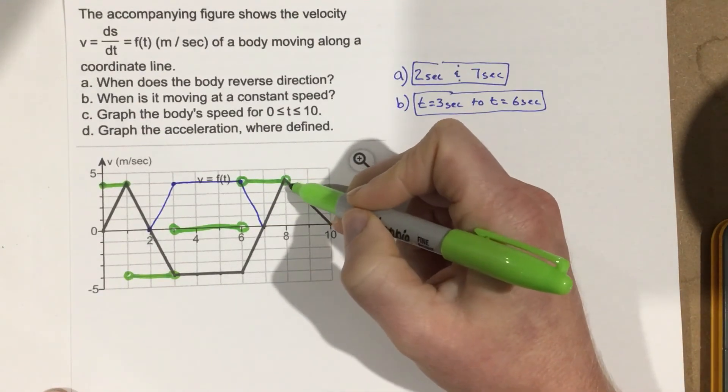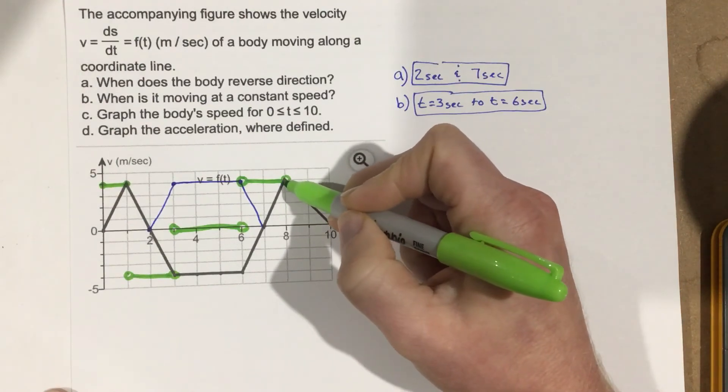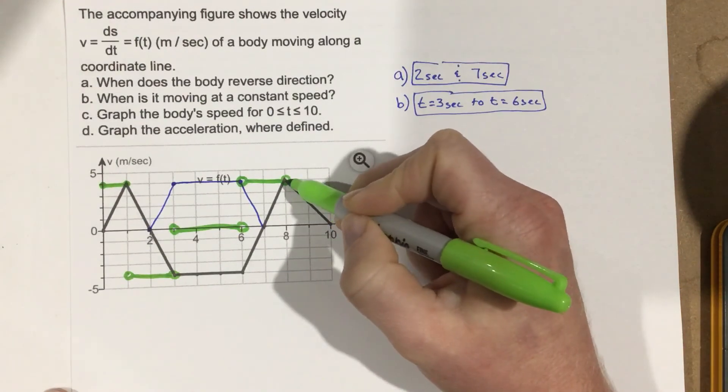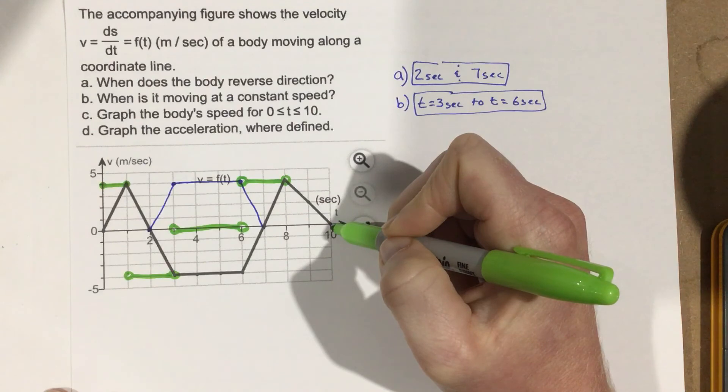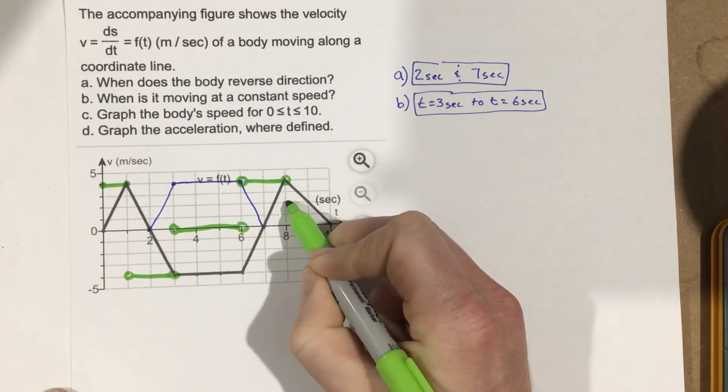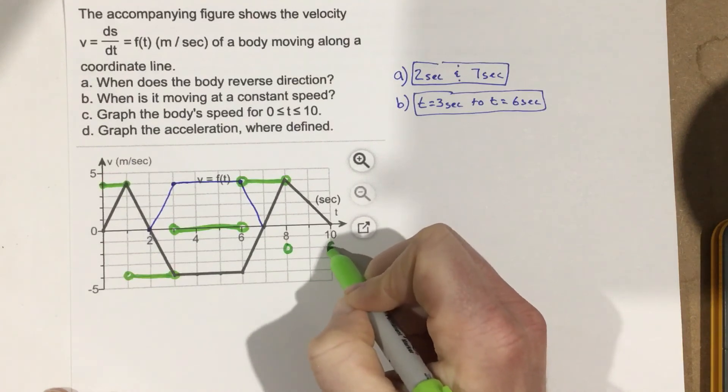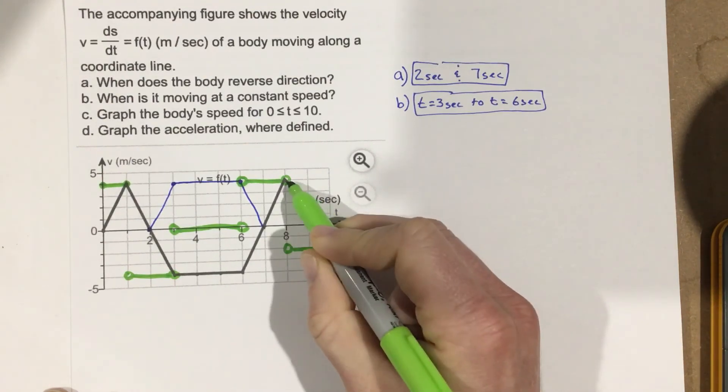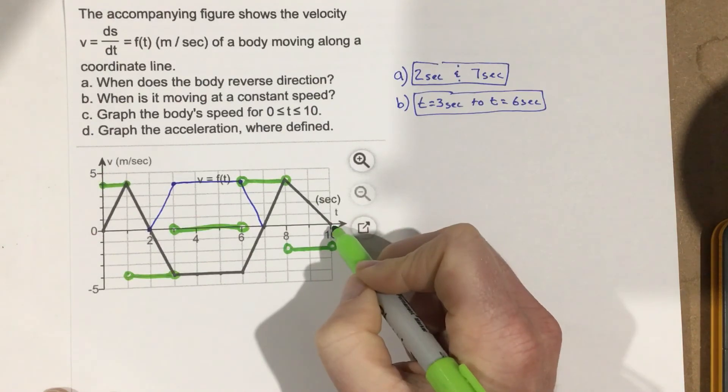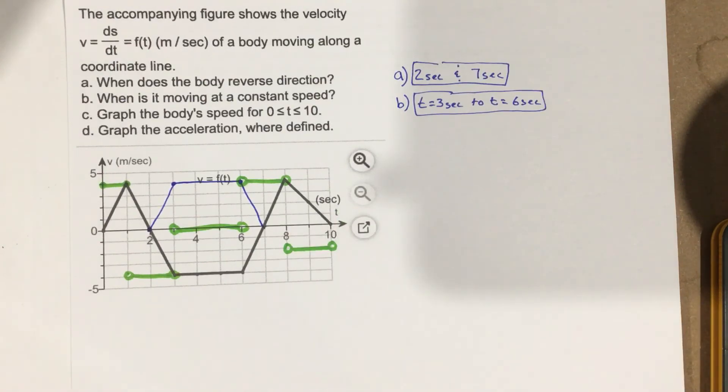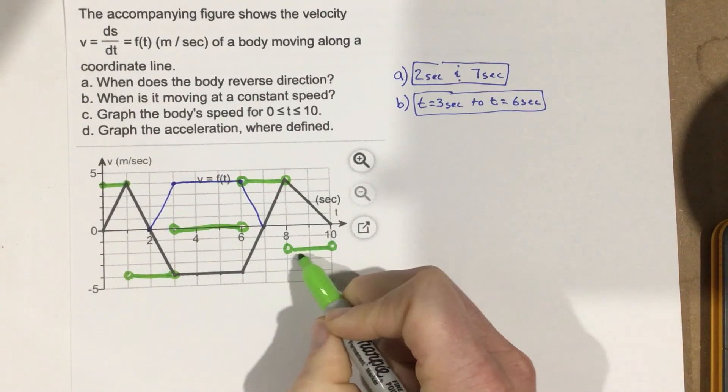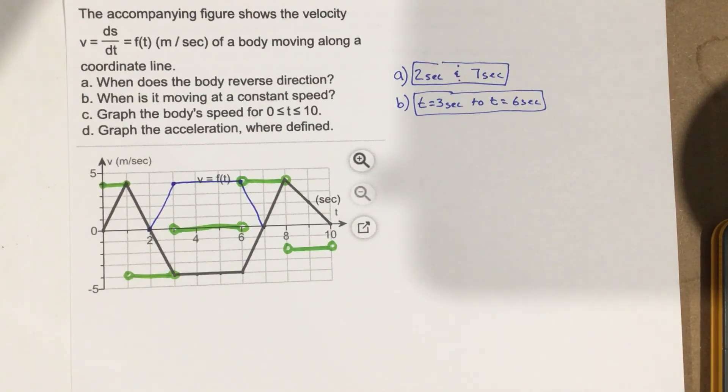And then finally, we're going to have an acceleration from 8 seconds to 10 seconds where we drop 4 over 2 seconds, so this is actually an acceleration of negative 2 meters per second squared. We're going down 4 meters in 2 seconds, so that's a negative 2 meters per second squared acceleration.